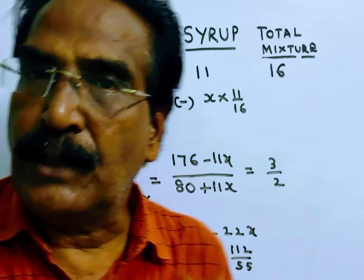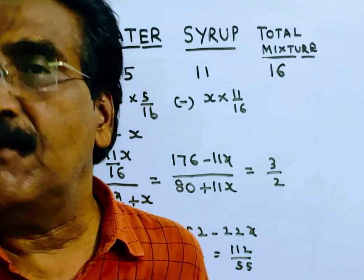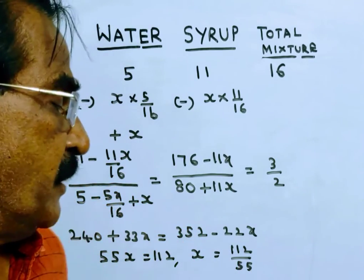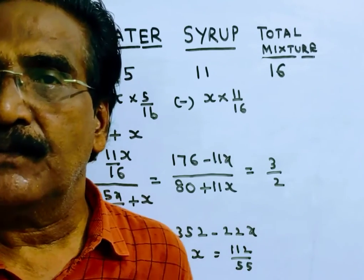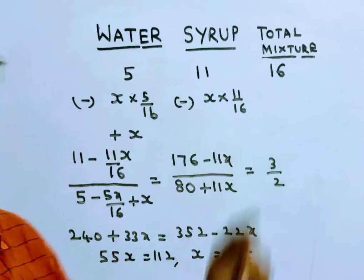So we have to draw 112 by 55 liters of mixture. Here the question is, this 112 by 55 is what part of the total mixture?